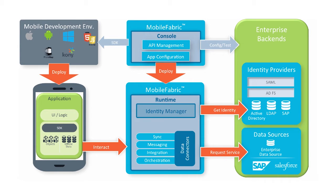Mobile Fabric also allows you to easily authenticate users leveraging third-party or social identities, or existing enterprise identity providers such as Active Directory, SiteMinder, or OAuth. Mobile Fabric connects your identity services to your integration services, simplifying the management of identity providers with the services that they authorize.